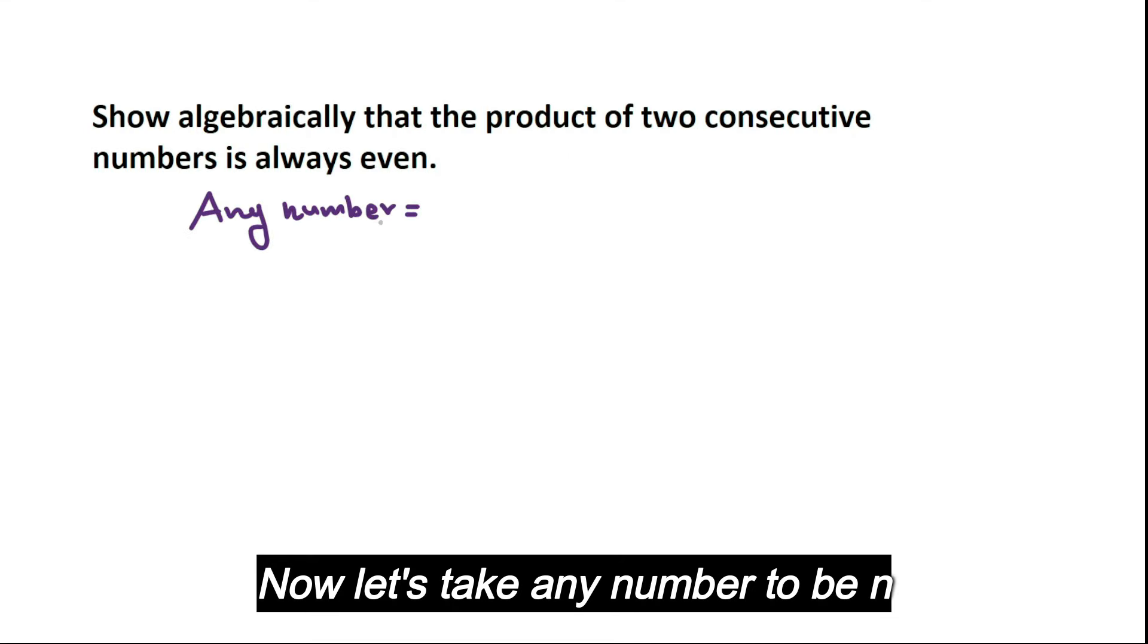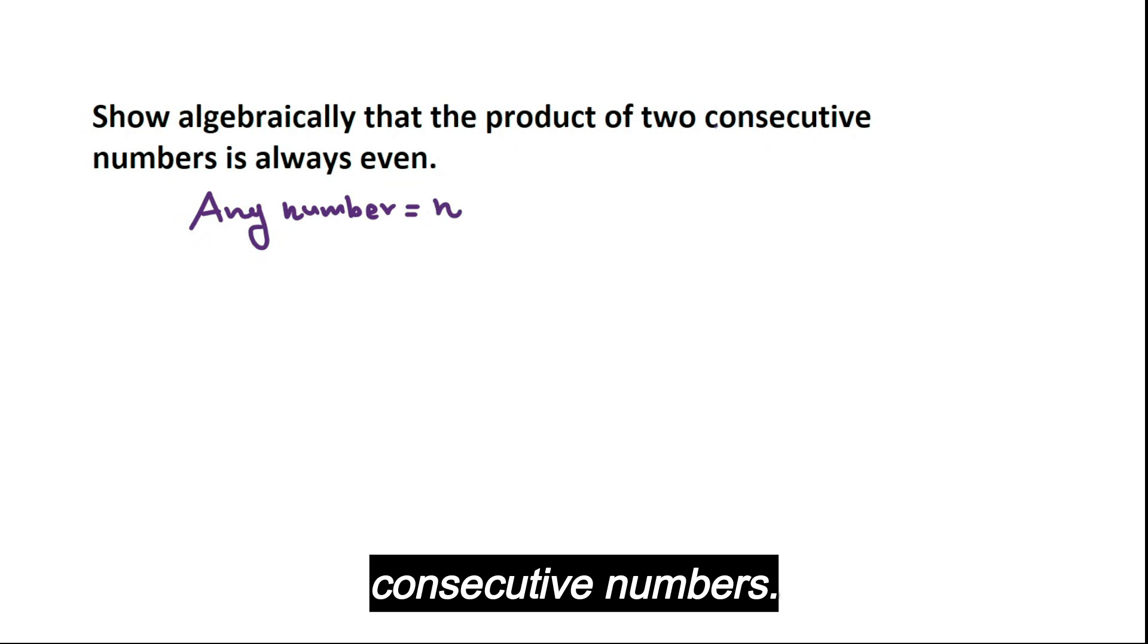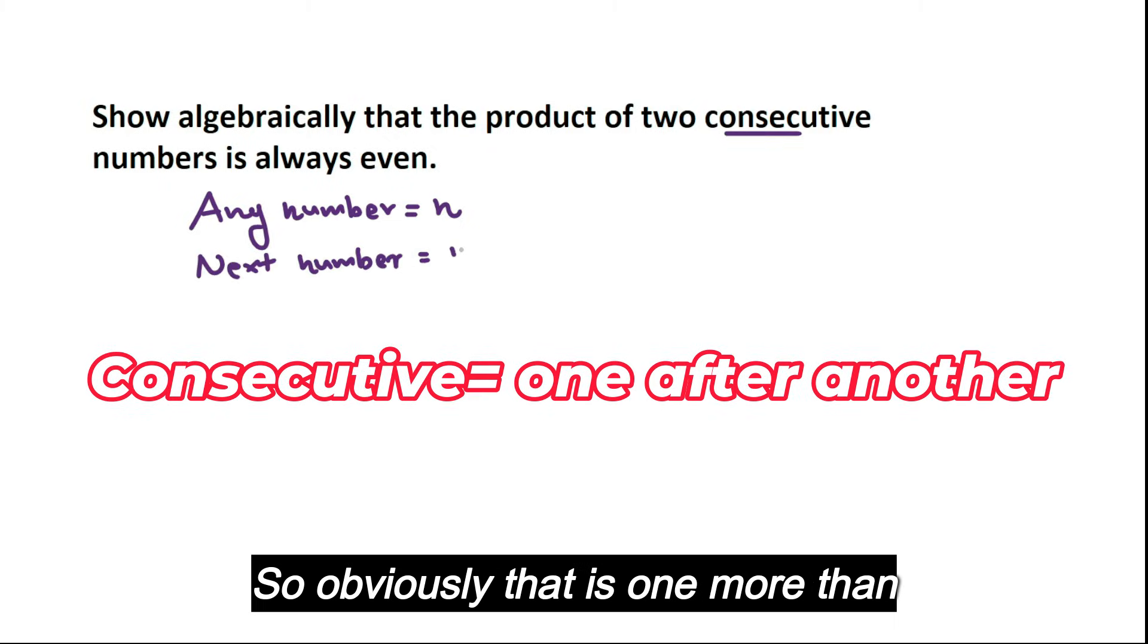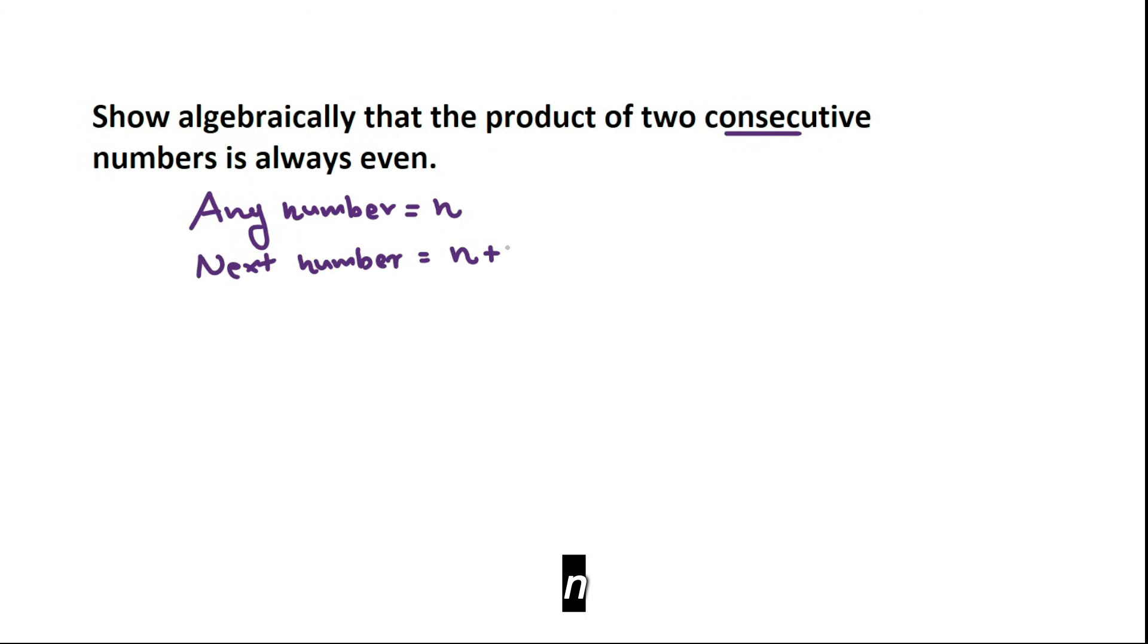Now let's take any number to be N. Show algebraically the product of two consecutive numbers. So I need to find the next number. So obviously that is one more than N.